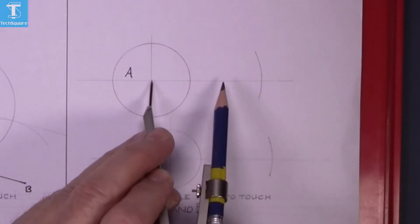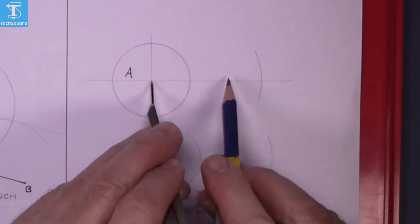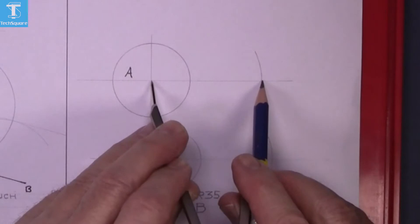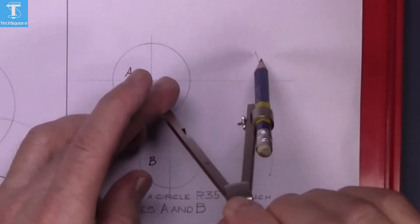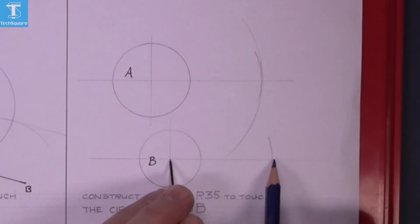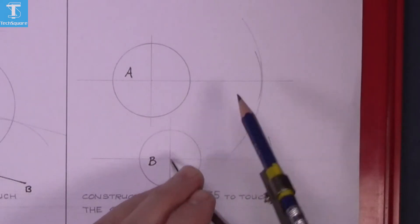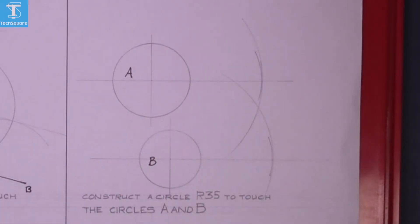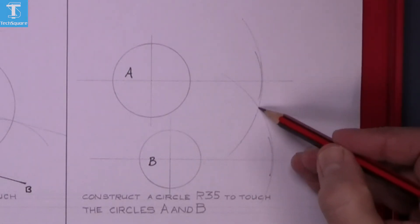Now from the center of A, set the compass out to the arc that you have just drawn and draw another arc. Now we repeat the process in circle B. Draw the second arc and where those two arcs meet, that's the center of the new circle.